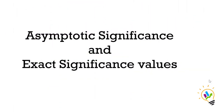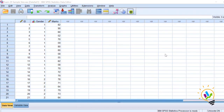Hello. In this video I am going to discuss what is asymptotic significant value and exact significant value, and when they must be used. When we are doing a non-parametric test we will be getting this asymptotic significant value and exact significant value.